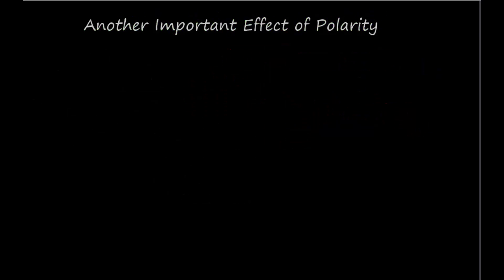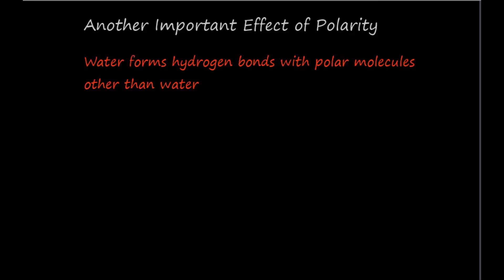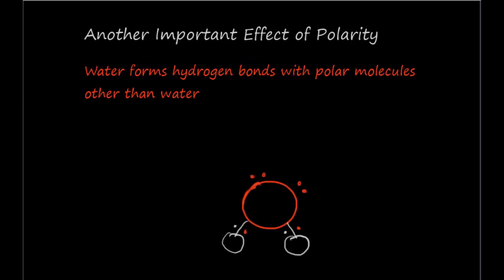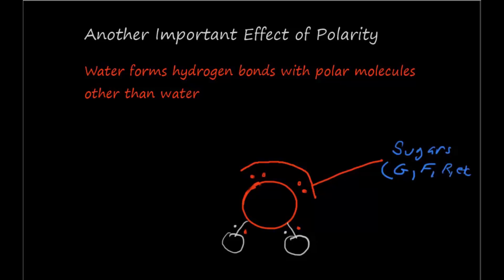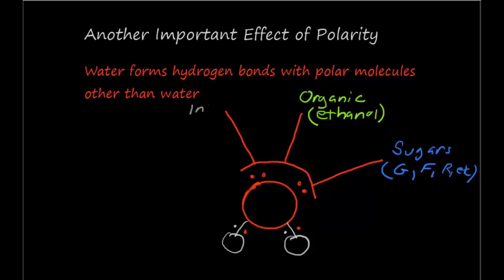Here is another important effect of polarity. Water, because of its polarity, forms hydrogen bonds with polar molecules other than just water. These other molecules include sugars such as glucose, fructose, or ribose, organic molecules such as ethanol, and inorganic molecules such as ammonia.